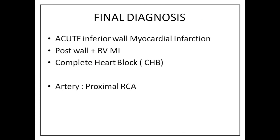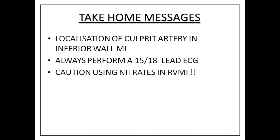So the final diagnosis is an acute inferior wall myocardial infarction with concurrent posterior wall MI and RVMI, with complete heart block. The artery involved is a proximal RCA. The take-home messages are: how to localize the culprit artery in an inferior wall MI, the importance of a 15 or 18-lead ECG, and the importance of caution with nitrates in a case of RVMI. A high index of suspicion and right-sided leads should be done routinely whenever you have an inferior wall MI, because muscle is time and time is muscle in acute coronary syndrome. Any doubts, please put them up and we will answer. Thank you.